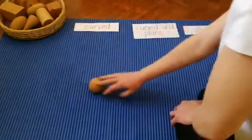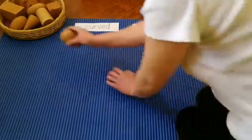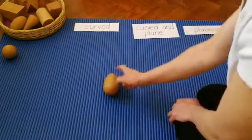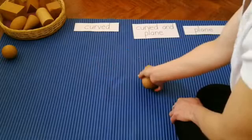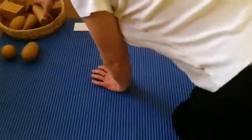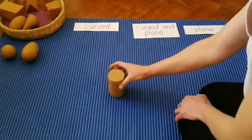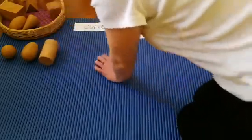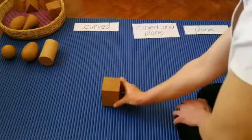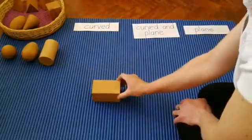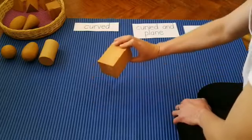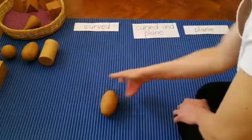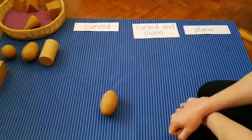This is a sphere. This solid is called an ovoid. This geometric solid is a cylinder. This geometric solid is called an ellipsoid.